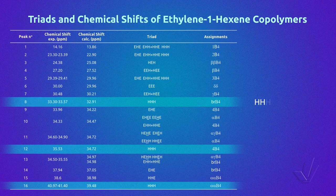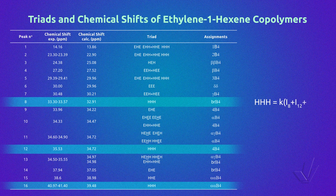HHH equals K, that is the normalization constant, multiplied by the sum of the integrals of peaks 8, 12 and 16, divided by 3 to obtain the average. When there is the possibility to have a triad represented by different peaks, it is always preferable to take an average of all the integrals to minimize errors.